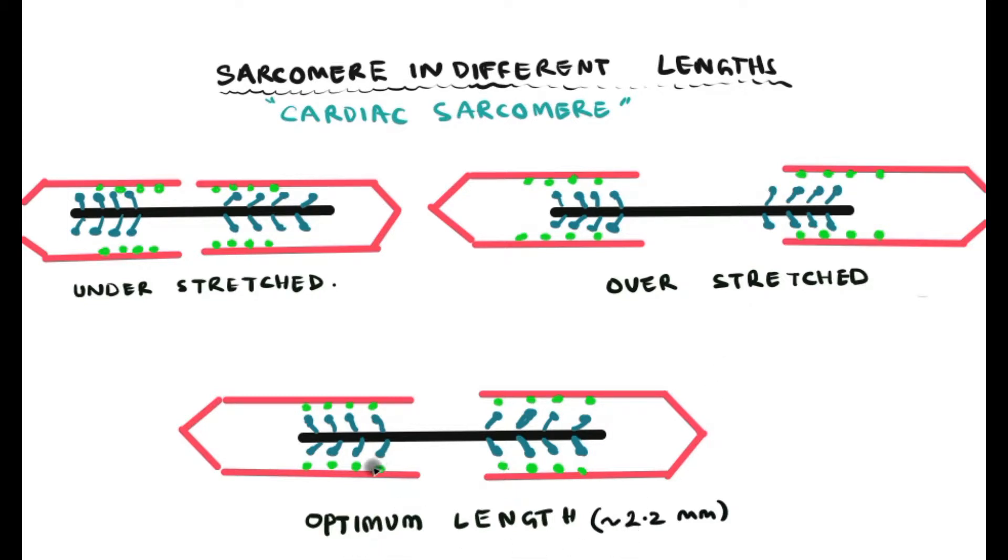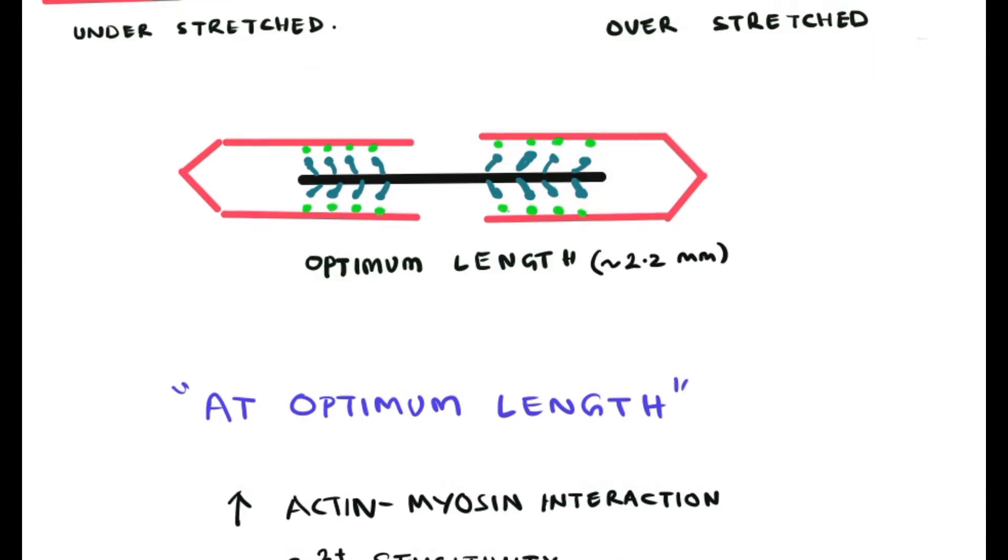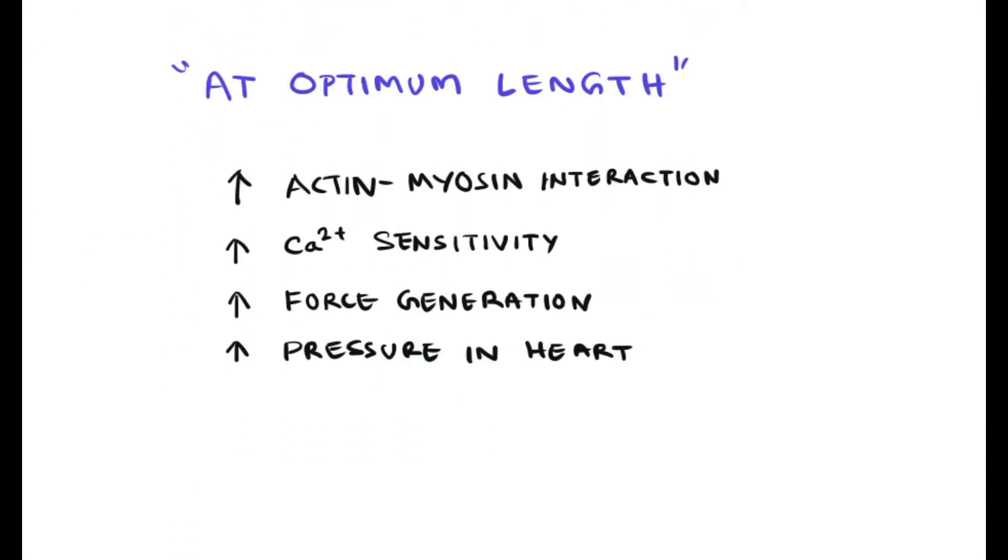Whereas at optimum length of the cardiac muscle, approximately 2.2 micrometers, we can have maximum force generation because all the actin-myosin interactions are possible at the optimal length. Increasing actin-myosin interaction increases calcium sensitivity upon stretch.